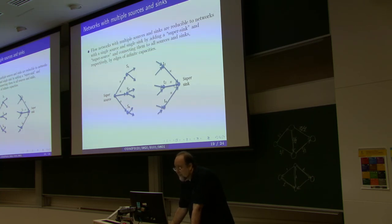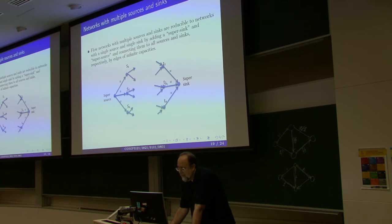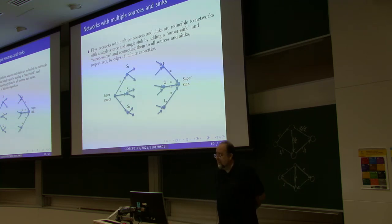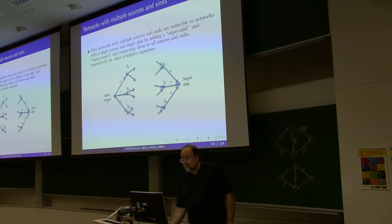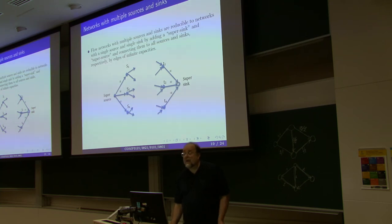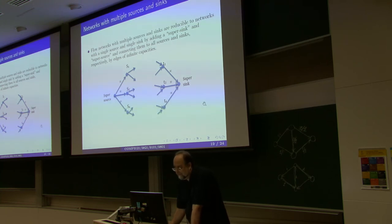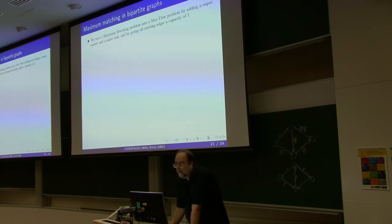Similarly, connect all sinks to the supersink by pipes of infinite capacity — the min cut can never cut any of these edges, so all sink vertices stay on the supersink side. Then simply run the standard Ford-Fulkerson algorithm with the supersource as the only source and the supersink as the only sink.